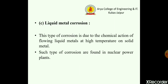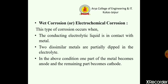Third is liquid metal corrosion. In this type of corrosion, the chemical action of flowing liquid takes place at high temperature on solid metal, and this type of corrosion is found in nuclear power plants. These are all the types of dry corrosion. The second classification of corrosion is wet corrosion or electrochemical corrosion.